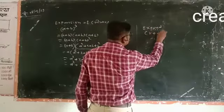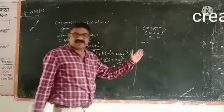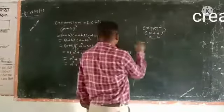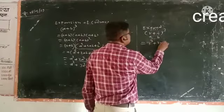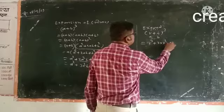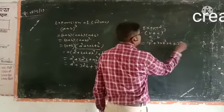K cube, A cube, plus 3A squared B multiplied by 4, plus 3 multiplied by A, K multiplied by K.